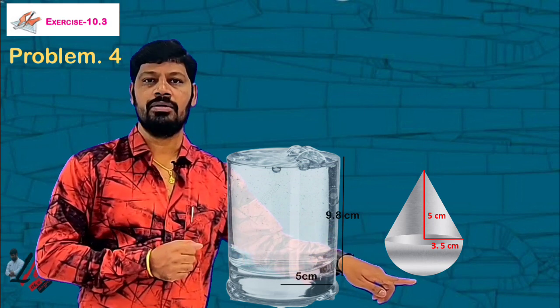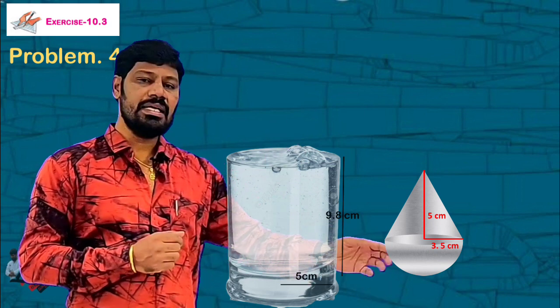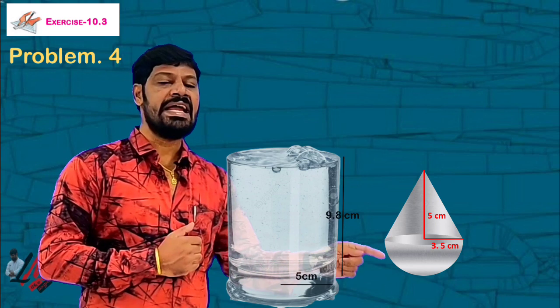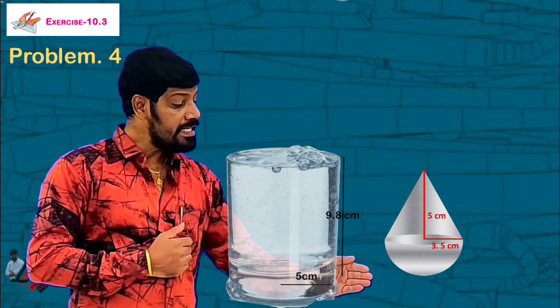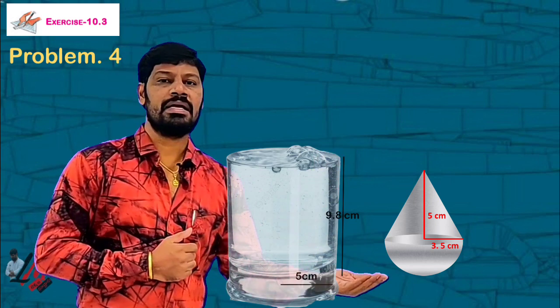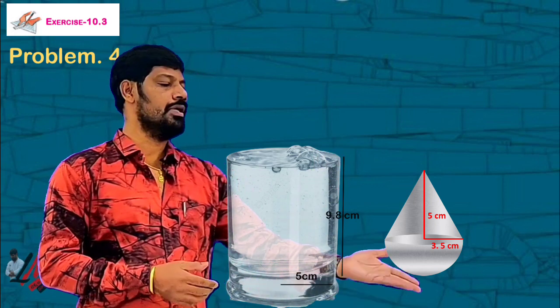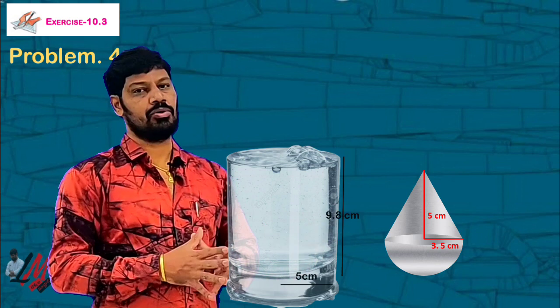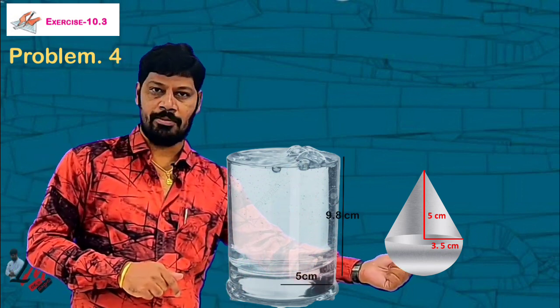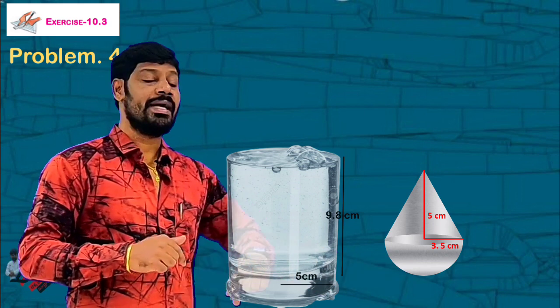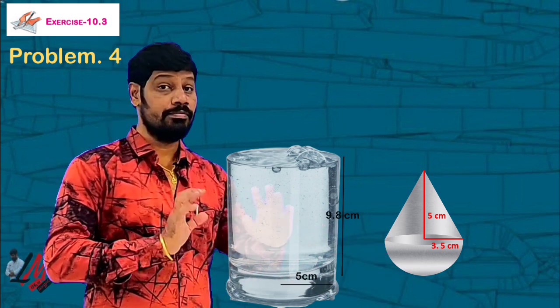So here in this dimension, the radius is 3.5, 3.5 is 7 by 2. The height of cone is 5. I don't have to use the hemispheric information involved here because the radius is the same. So the radius is 5, the cone is 3.5, the height is 9.8, the cone is 5. Be clear.